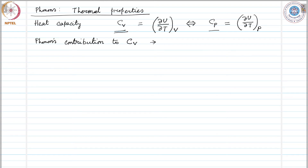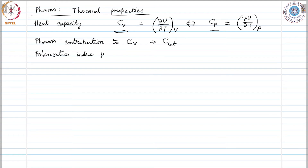The phonon contribution to Cv is called C_lat, which comes from the lattice. Phonon waves, just like photon waves (electromagnetic waves), can be polarized. If we consider a polarization index p, then we can write the lattice contribution to the internal energy U_lat as a sum over phonon wave vectors K and a sum over the polarization index of u_{k,p}.